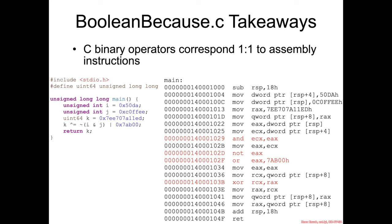The takeaway from boolean_because.c is quite simple: there's a one-to-one correspondence between any boolean bitwise operations you place into your C code and boolean bitwise operations that will be generated in the assembly.